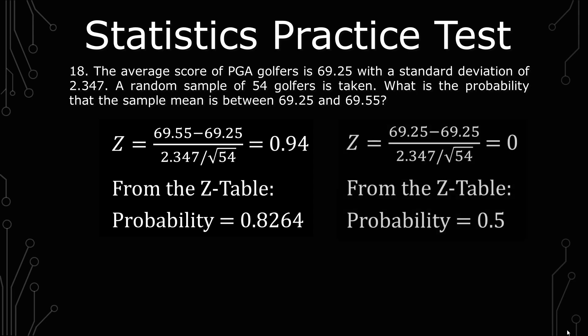The second is 69.25 minus 69.25, over 2.347 divided by the square root of 54, which gives us zero. And from the z-table we get a probability of 0.5.